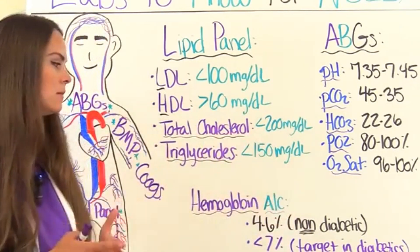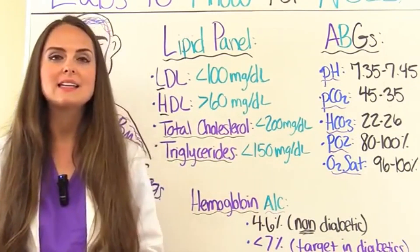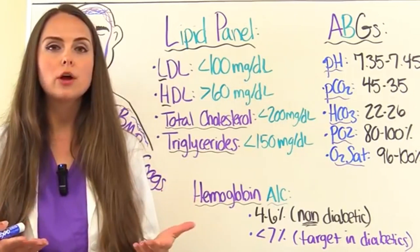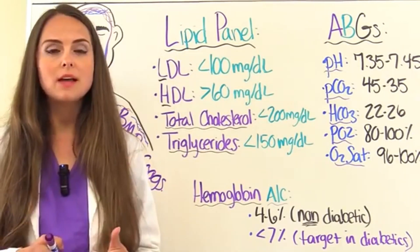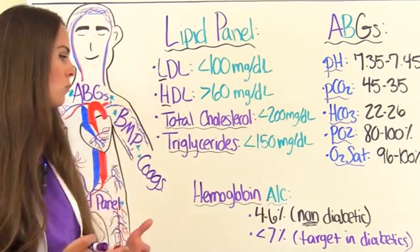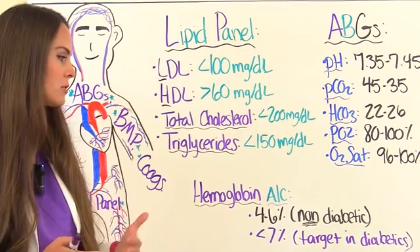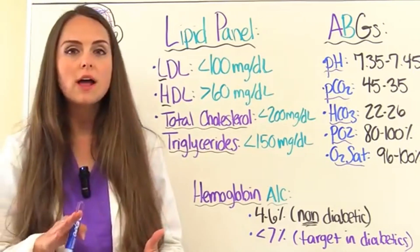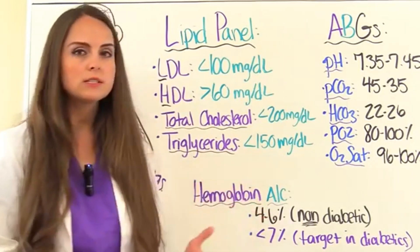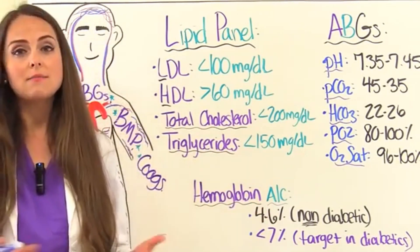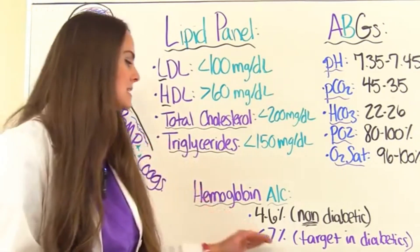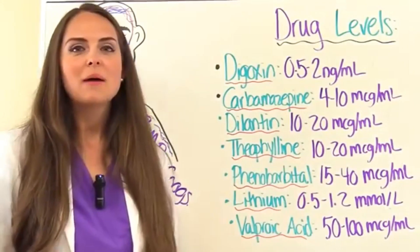The hemoglobin A1c test helps determine the average glucose in a person over the last three months — great for patients with diabetes. In a person without diabetes, we want a hemoglobin A1c of 4 to 6%. If they have diabetes, the target hemoglobin A1c should be less than 7%.